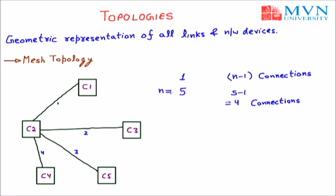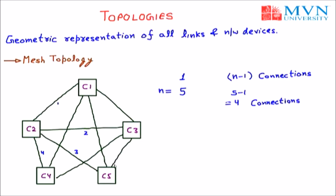Similarly, all computers are connected with each other. C1 is connected with C2, C4, C5, and C3. C3 is already connected with C1 and C2, and is also connected with C4 and C5. C5 is already connected with C3, C1, C2, and now connected with C4. C4 is already connected with all the computers.